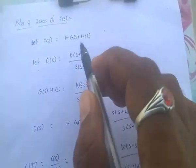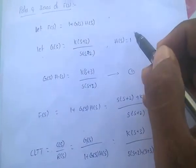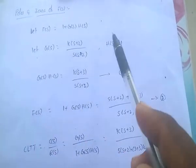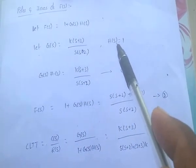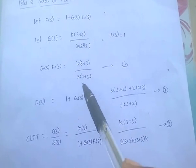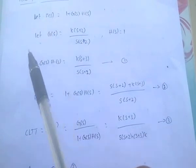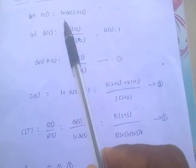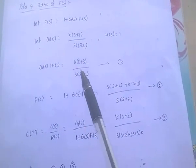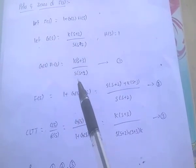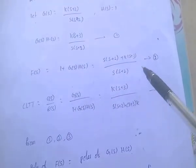Let G(S) = K(S+3) / [S(S+2)] and H(S) = 1. Then G(S)·H(S) = K(S+3) / [S(S+2)]. So F(S) = 1 + G(S)·H(S) = [S(S+2) + K(S+3)] / [S(S+2)].